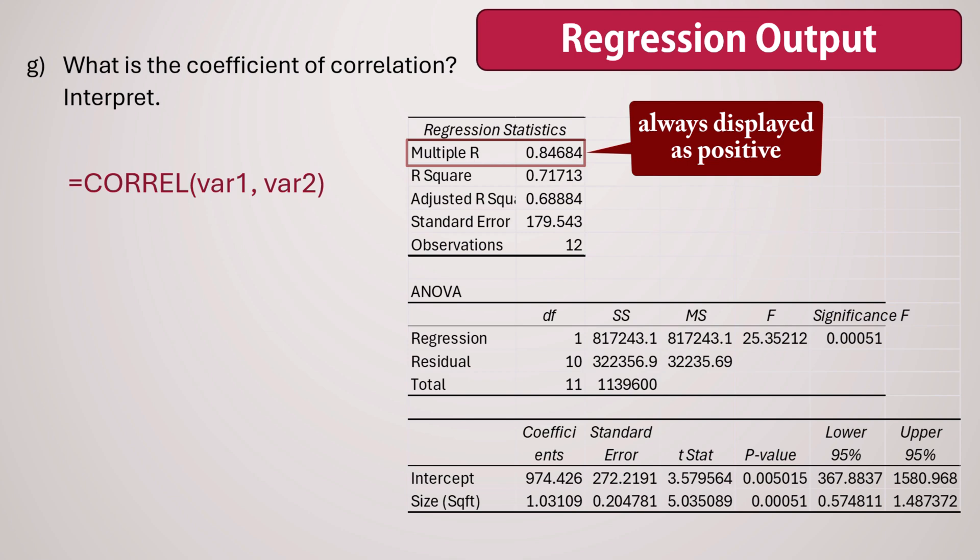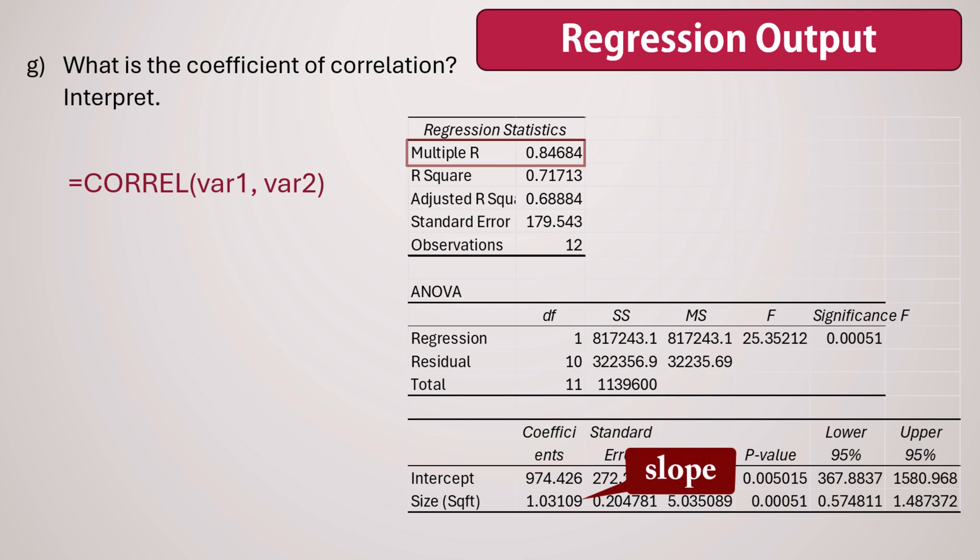This can be a bit misleading, but there's a way to clarify what the true sign should be. The slope of the regression line and the correlation coefficient always have the same sign. To determine the true sign of R, simply check the sign on the slope. If the slope is positive, then R would also be positive. If the slope is negative, R would be negative as well. In our case, the correlation coefficient is positive 0.847, since the slope is positive.